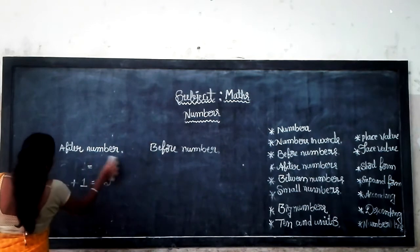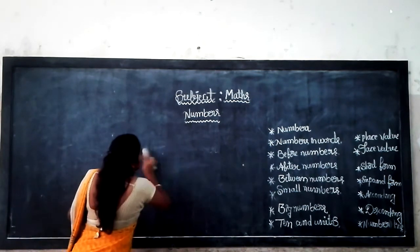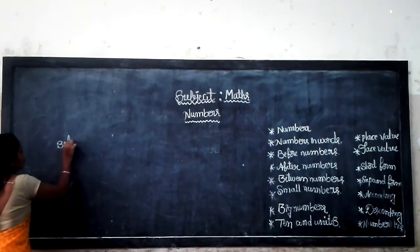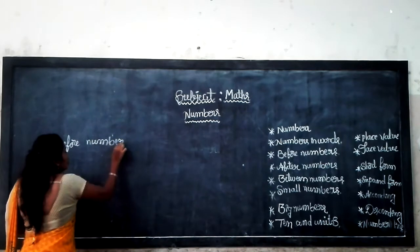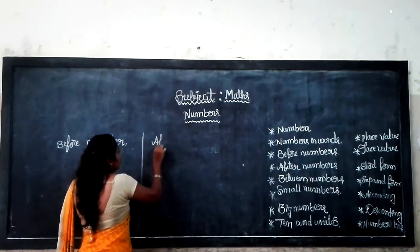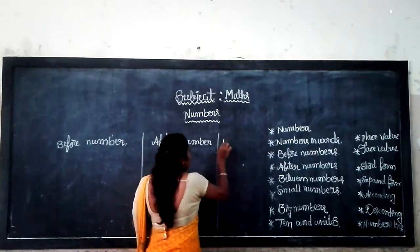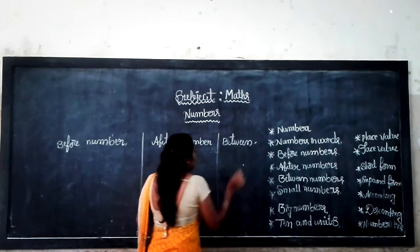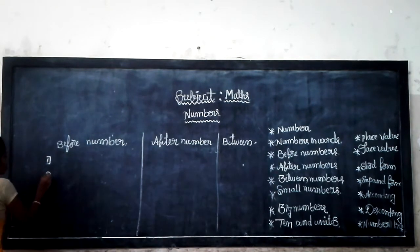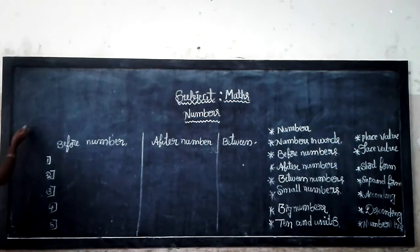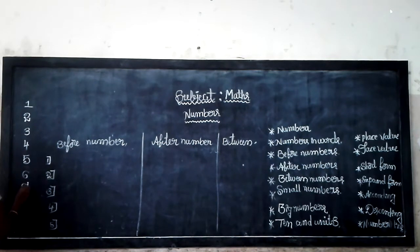Let's keep going to the next one. The after number, before number, and between number. I will write numbers 1, 2, 3, 4, 5, 6, 7, 8, 9, 10.